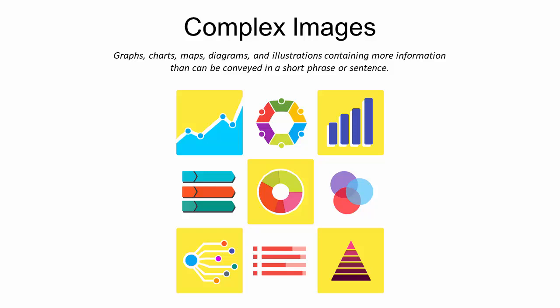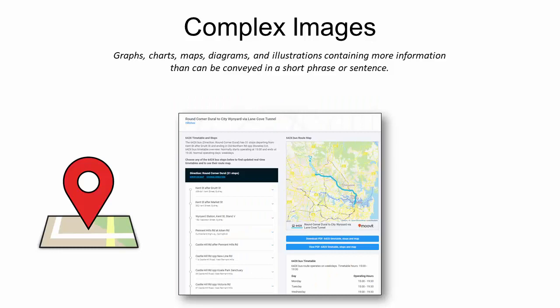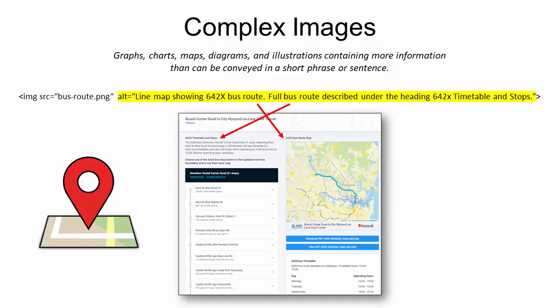Complex images include graphs, charts, maps, diagrams, and illustrations that contain more information than you can convey in a short phrase or sentence. The best way to use alt tags with complex images that need long and detailed text descriptions is to include the long description on the same page as your image and just refer to its location in the alt attribute.